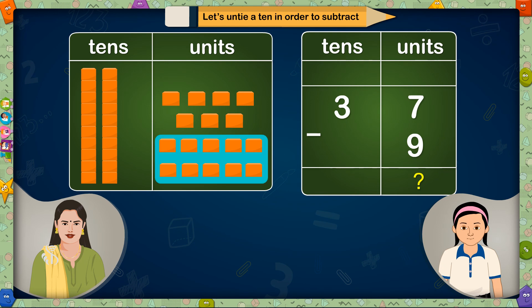If we untie 1 ten, we will get 10 units plus 7 units, that is 17 units. And as we have untied 1 ten out of 3 tens, only 2 tens will be left. Now we will reduce 9 units from 17 units. How many units will remain then?